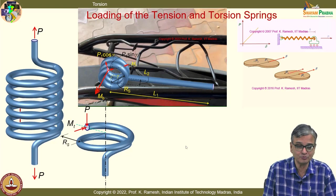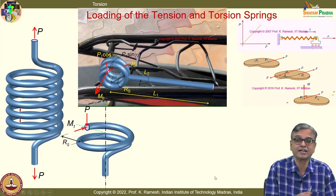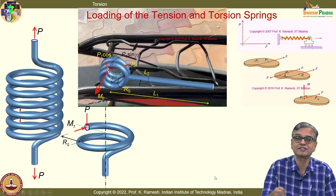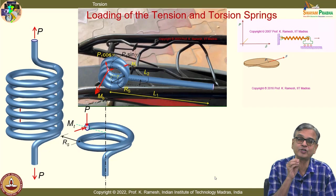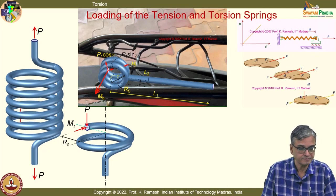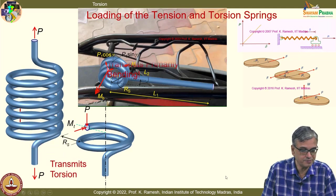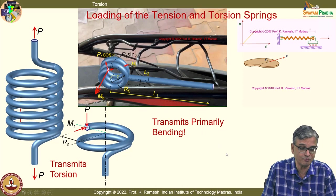Do not simply say that when you have a coil spring stretched, it is transmitting axial load — do not say that. It is actually transmitting a twisting moment. A torsional spring transmits torsion and a coil spring transmits primarily bending. You have to know the difference.